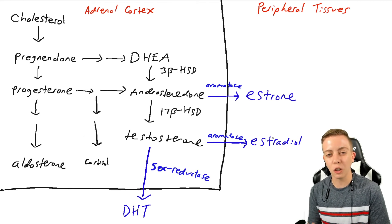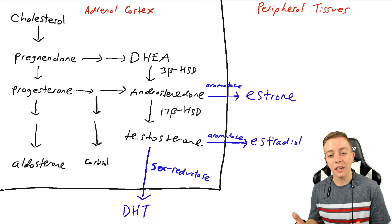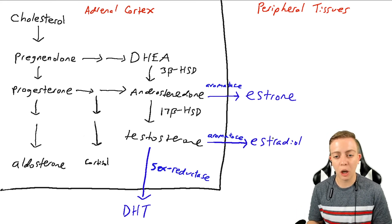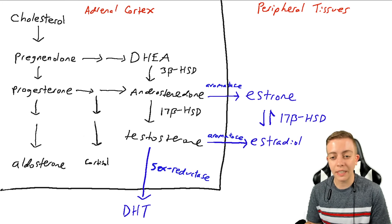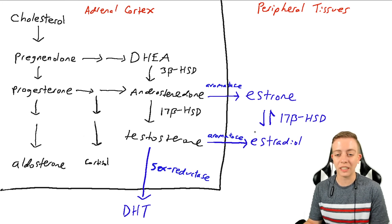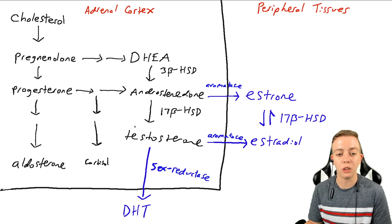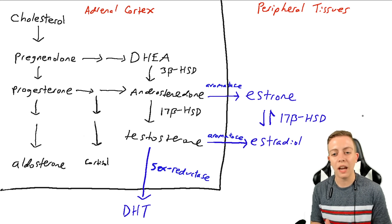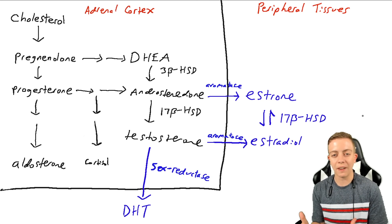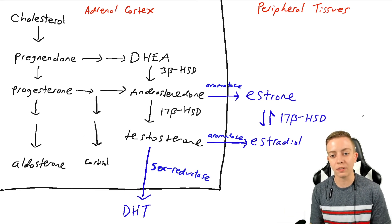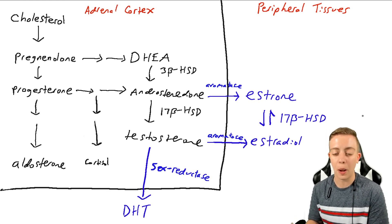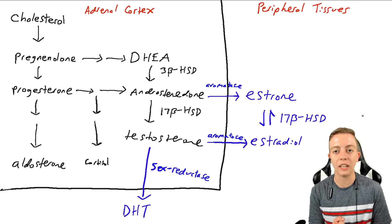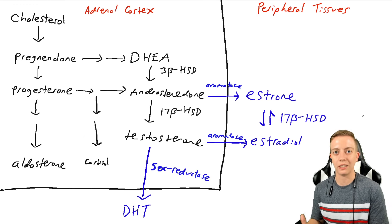We can also have some conversion from estrone to estradiol, done by 17-beta-hydroxysteroid dehydrogenase — the same enzyme that converts androstenedione to testosterone. Estrone and estradiol can be converted in both directions: estrone can be converted by 17-beta-HSD to estradiol, and estradiol can be converted back to estrone. This is our intro to estrogen balance in the body.